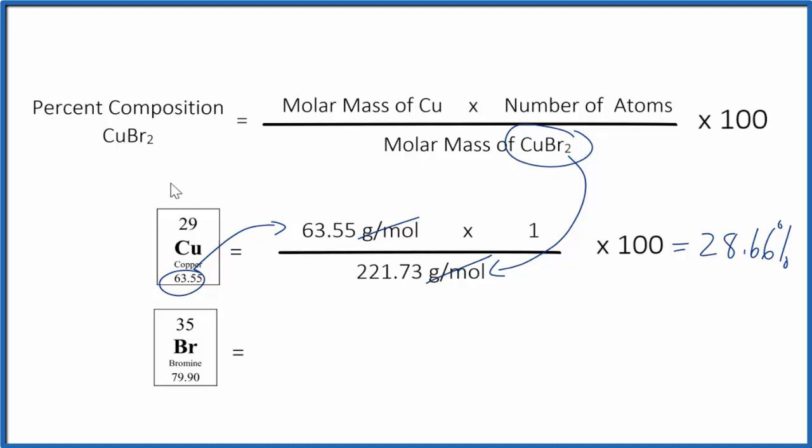So pause and calculate the percent composition by mass for the bromine in this CuBr2. And remember, we have the number of atoms. We have two bromine atoms.